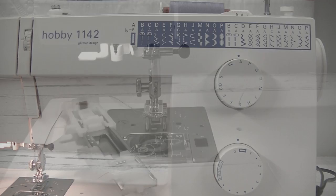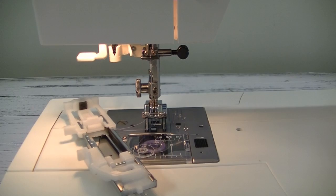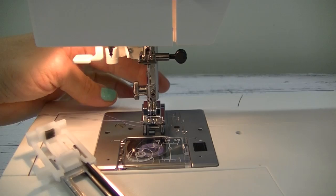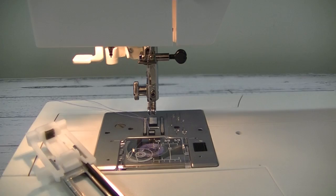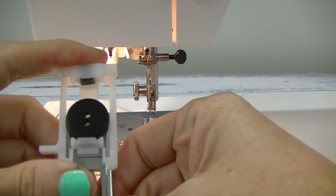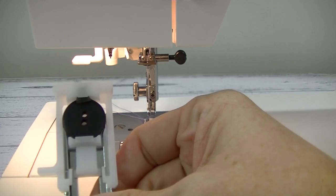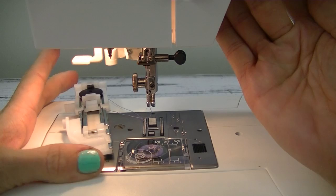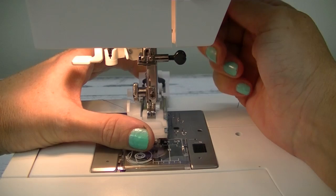To attach the buttonhole foot, wind the flywheel towards you to ensure that your needle is in the upright position. Push the button on the back of the foot to release and then take off your standard foot. To set the length of your buttonhole, the end of the foot is adjustable. So open it out and place your button in and then close it up. It will do up to an inch wide button. Use the presser foot lifter to push it to its highest position and then lower over the top of your foot and secure in place.